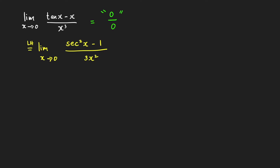Can we already determine the limit? The limit of the denominator is 0, and the limit of the numerator is secant of 0 squared minus 1, which is 1 minus 1 = 0. So this limit again has the form 0 over 0, which is an indeterminate limit. Since it is in the form 0 over 0, we may apply L'Hôpital's rule again.